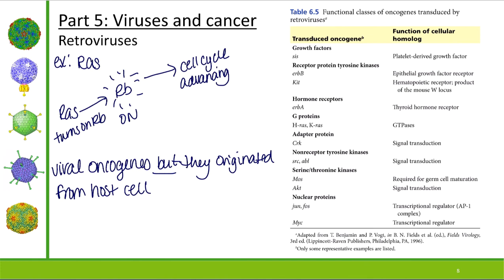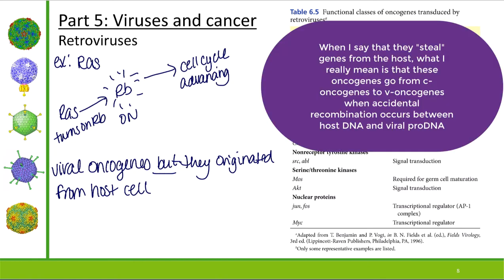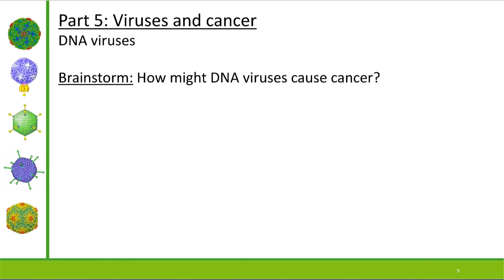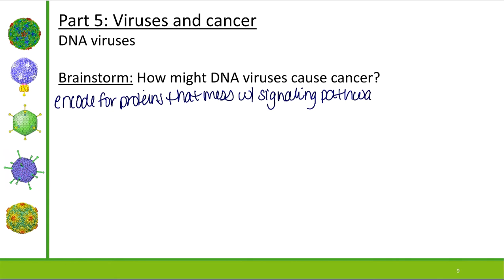So that's retroviruses. What about DNA viruses — how might they cause cancer? One of the ways is that they can encode for proteins that mess with signaling pathways. Outside of P53 and RB, there are other pathways too, but those are the more common and more understandable ones. So DNA viruses are going to encode for proteins that interfere with signaling pathways.